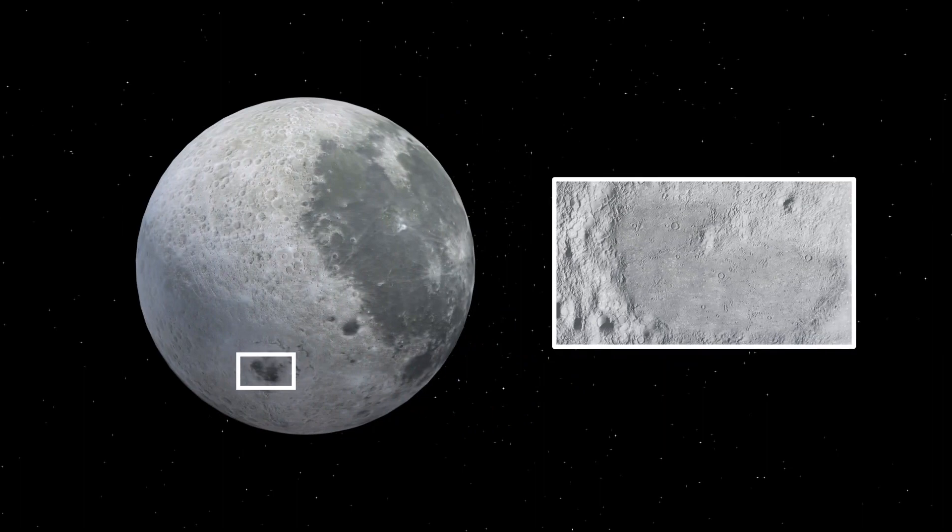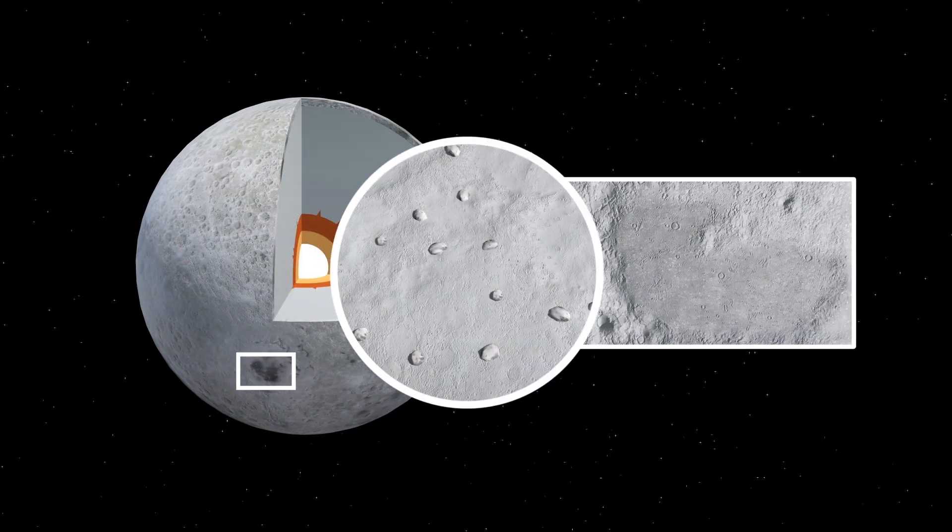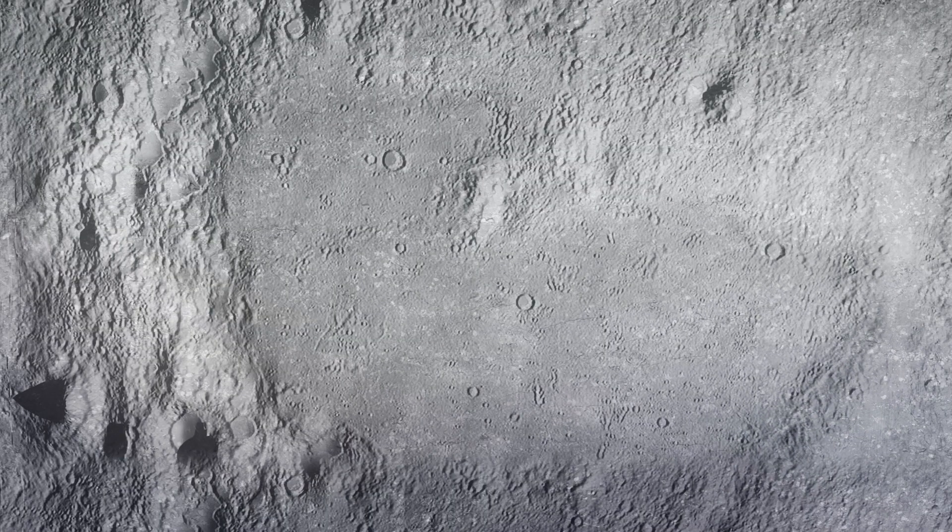In May, Chinese scientists also announced that they'd found evidence of material from the lunar mantle in the regolith of the moon's Von Kármán crater.